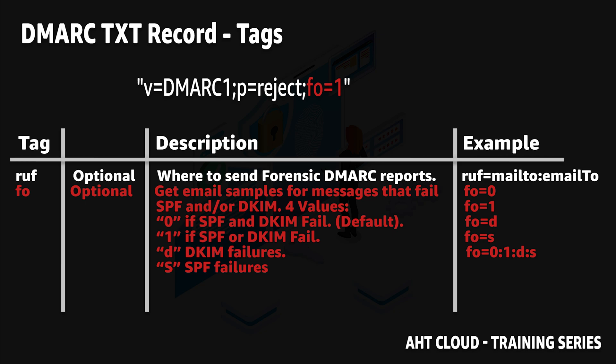The third option is the d value, which generates reports only if your DMARC failed. Then you have the s value, which generates reports if your SPF fails. You can specify multiple values by separating them with a colon. I personally recommend you set the fo tag to one, so you can receive a copy of any email sent on your behalf that fails either SPF or DMARC authentication.